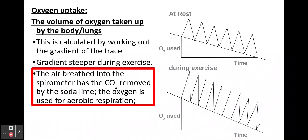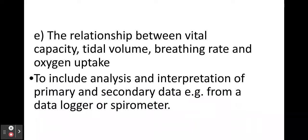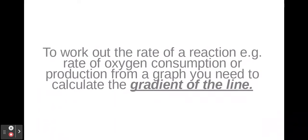Oxygen uptake is a little bit more complicated. The oxygen uptake is the air breathed into the spirometer once the carbon dioxide has been removed by the soda lime. This can be calculated by working out the gradient of the line. You draw a line along the peaks or the troughs and you would calculate the gradient.